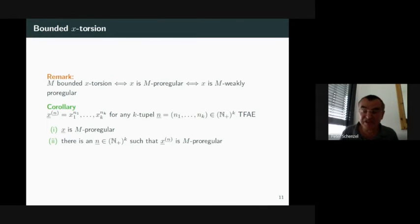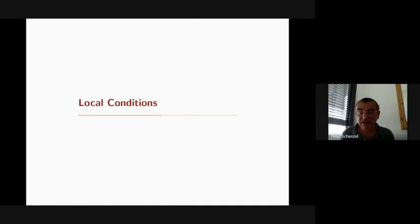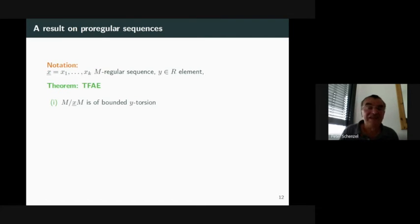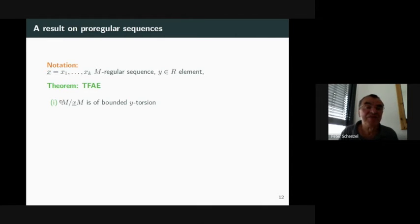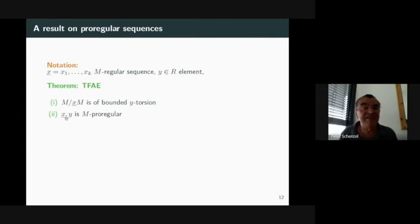Moreover, for this module obtained by subsequently factoring out the torsion with respect to the first i−1 and first i elements, it is X_i-divisible for i from 1 to k for any injective R-module. This gives a generalization of the characterization of when M is of bounded X-torsion for a given element. As a corollary, introducing X^n-bar as a sequence of powers for any k-tuple of positive integers, the following conditions are equivalent: X is pro-regular; there is an N-tuple such that this sequence is pro-regular; and this holds for all N-tuples. This comes from the homological characterization, because the torsion does not depend on the powers of the elements when the ideal is finitely generated.